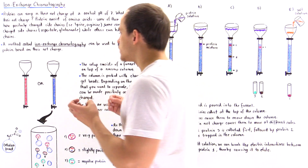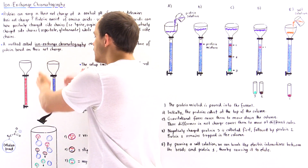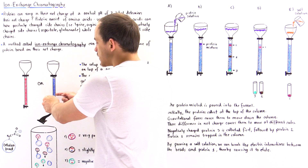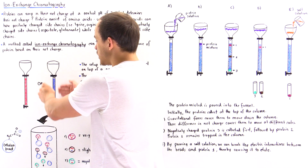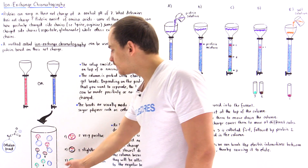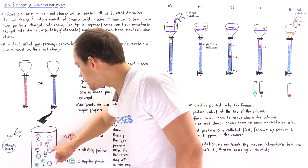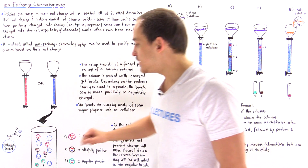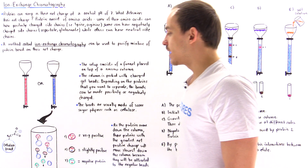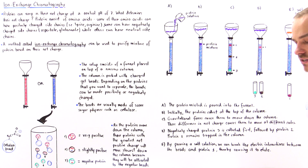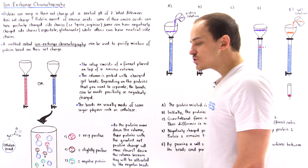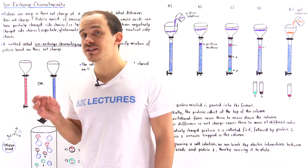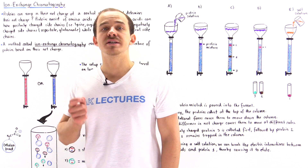In this lecture, we're going to focus on the negatively charged bead setup. Let's zoom in on a small section of our column. These blue beads are our negatively charged cellulose beads. Now let's suppose we want to separate a mixture of three different proteins that differ from one another based on their net charge.